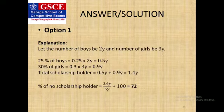Then, if 25 percent of the boys are scholarship holders, then the remaining 100 minus 25, that is 75 percent, will not be getting a scholarship. Likewise, 30 percent of the girls are scholarship holders, then the remaining 100 minus 30, that is 70 percent, will not be getting a scholarship.